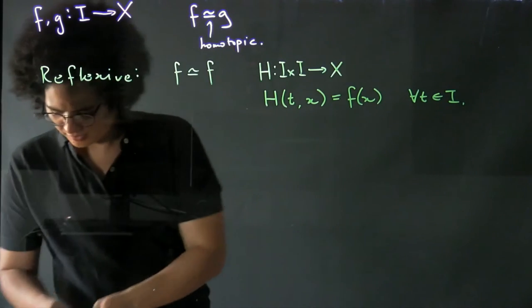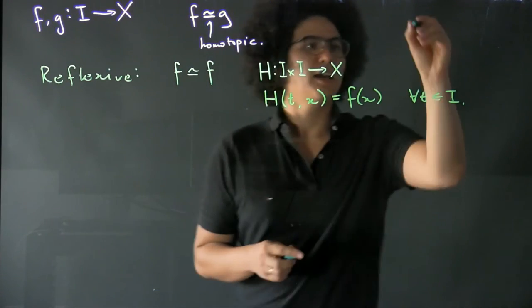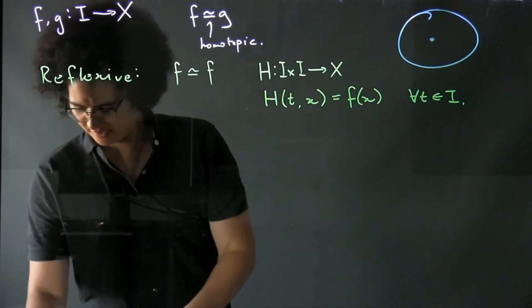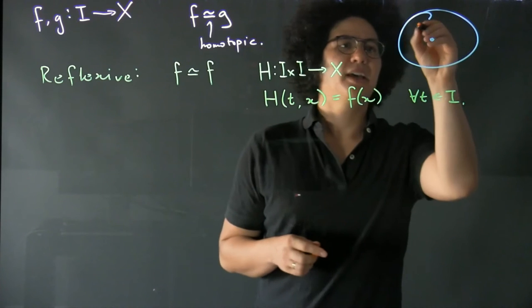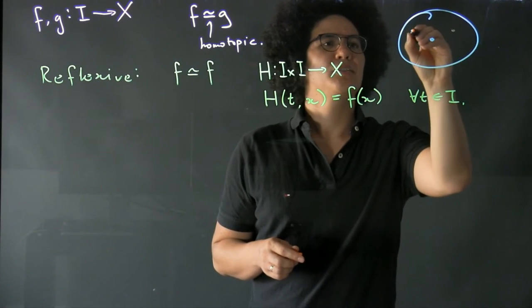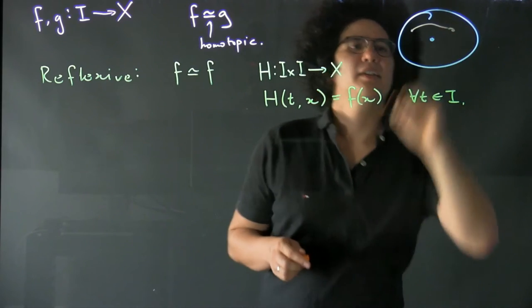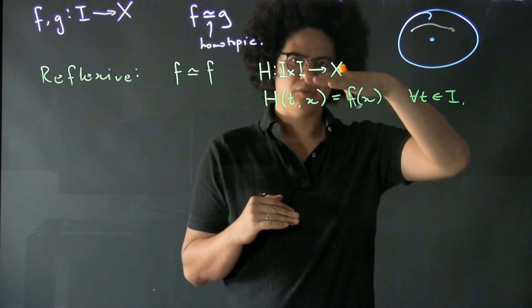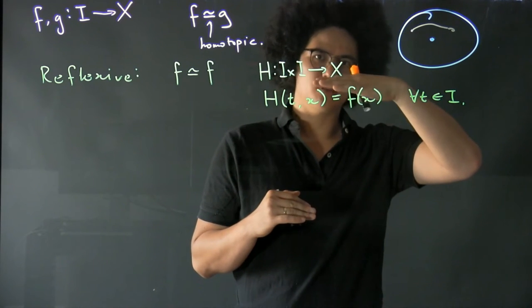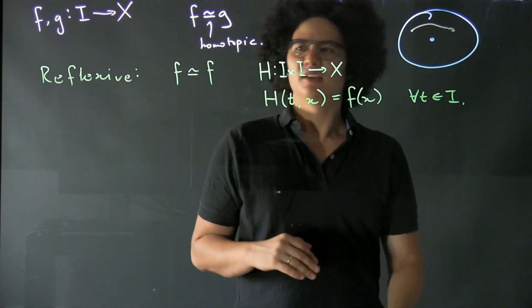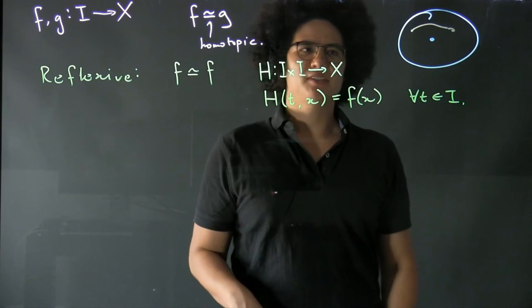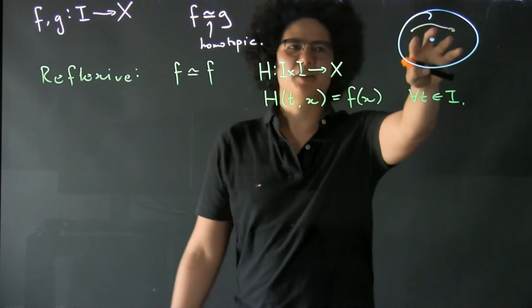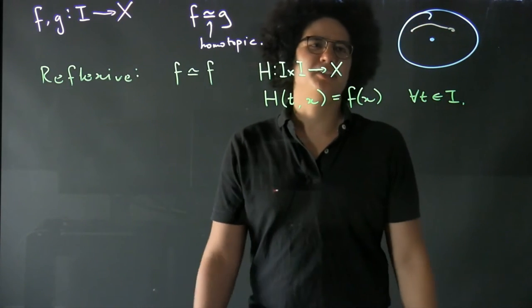So again, previously we had this punctured disc example and we had a path from here to here, and we said you could sort of draw movies between paths, continuous families of paths between paths. In the reflexive case, we just say oh, take them all to be the same map. So we just take the movie where for one second we just look at that path sitting there by itself.